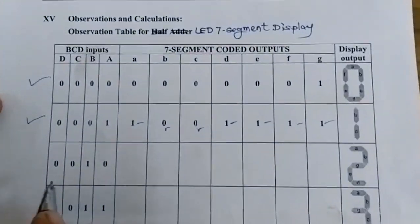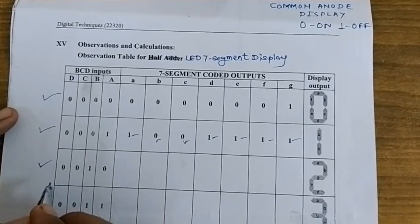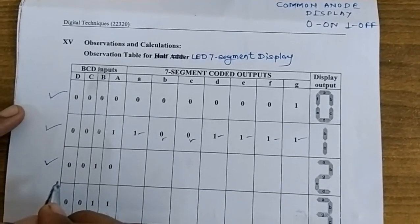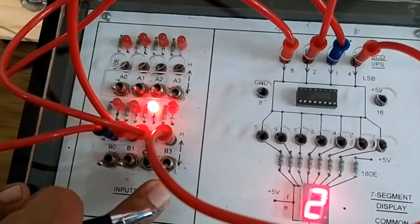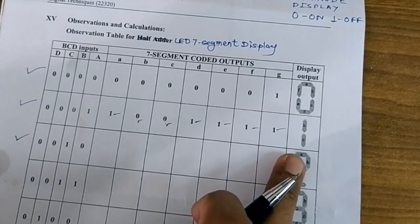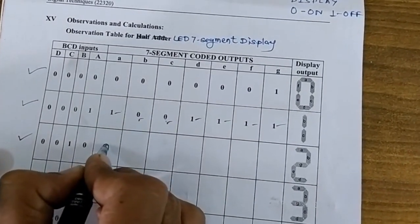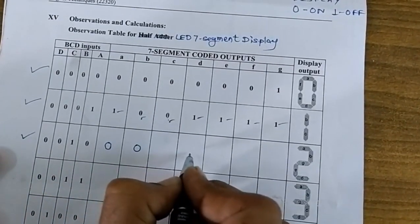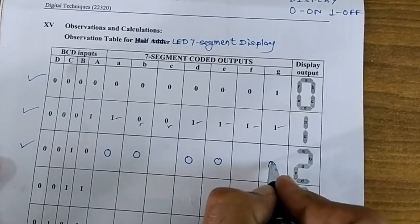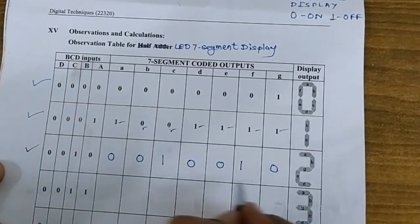Moving to the next condition, BCD input 0 0 1 0 is applied to the 7-segment decoder. Setting the switches to 0, 0, 1, 0, the corresponding digit displayed is 2. For digit 2, segments A, B, G, D, and E are in the on condition, so A=0, B=0, D=0, E=0, G=0. The two segments in the off condition are F and C.